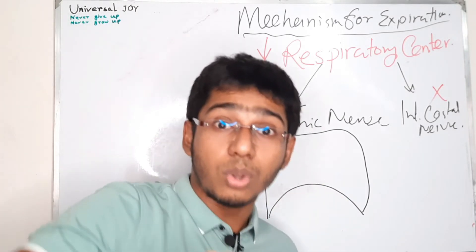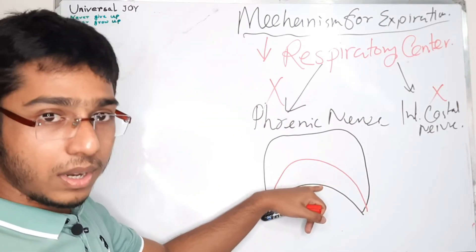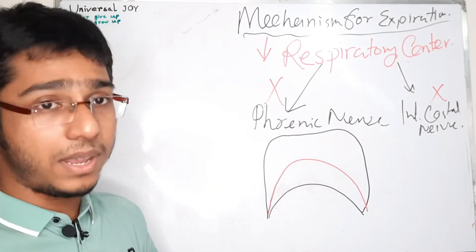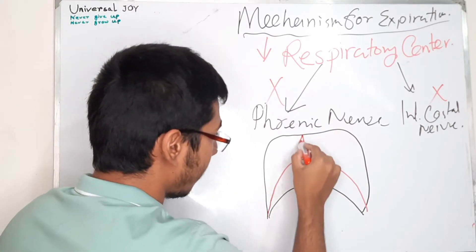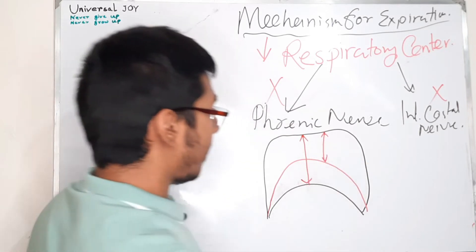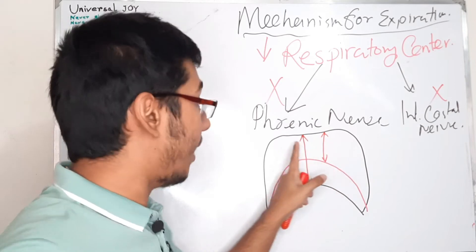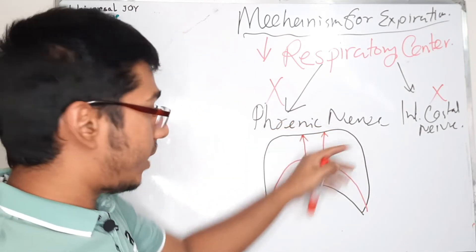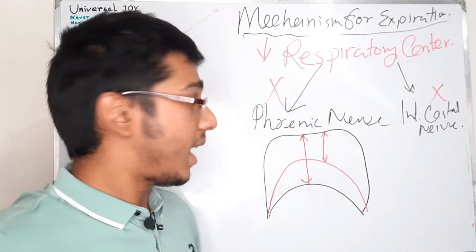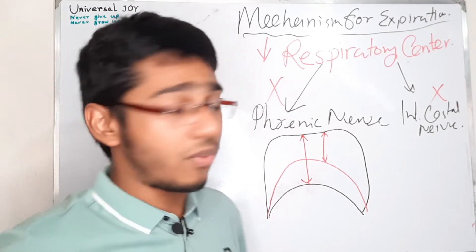Since there is no more signal from the phrenic nerve to the diaphragm, the diaphragm will now be relaxing. The moment the diaphragm relaxes, it goes upward — from its descended position drawn in black, it relaxes and ascends, represented in red. Previously the vertical diameter was larger, and after the diaphragm ascends the vertical diameter becomes smaller. So when the diaphragm ascends upward, the vertical diameter is found to be decreased, resulting in a reduction of vertical volume.